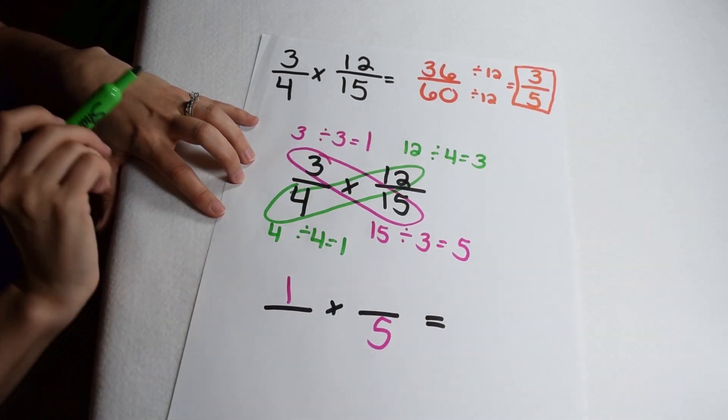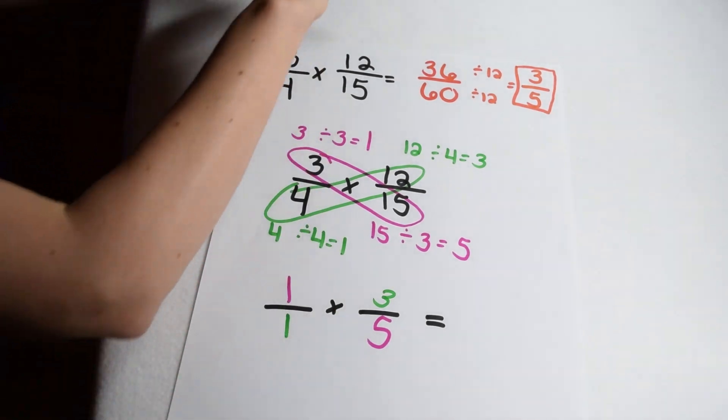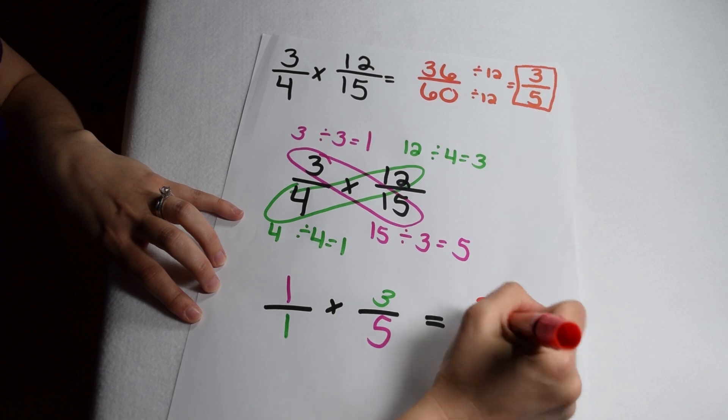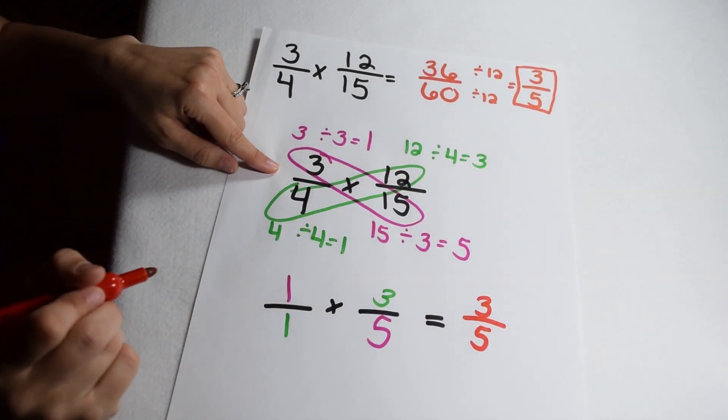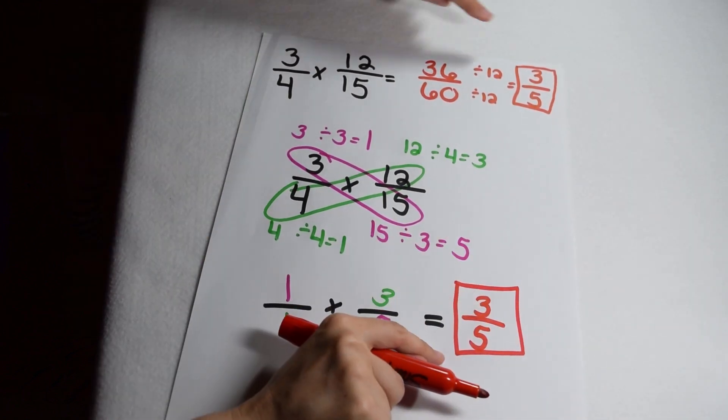So instead of using the 12 and the 4 in my problem, I can use the 3 and 1. I can multiply with those simplified values. 1 times 3 gives me 3, 1 times 5 gives me 5, and by canceling out and doing my simplifying first, I come to the same conclusion of three-fifths that I came to originally.